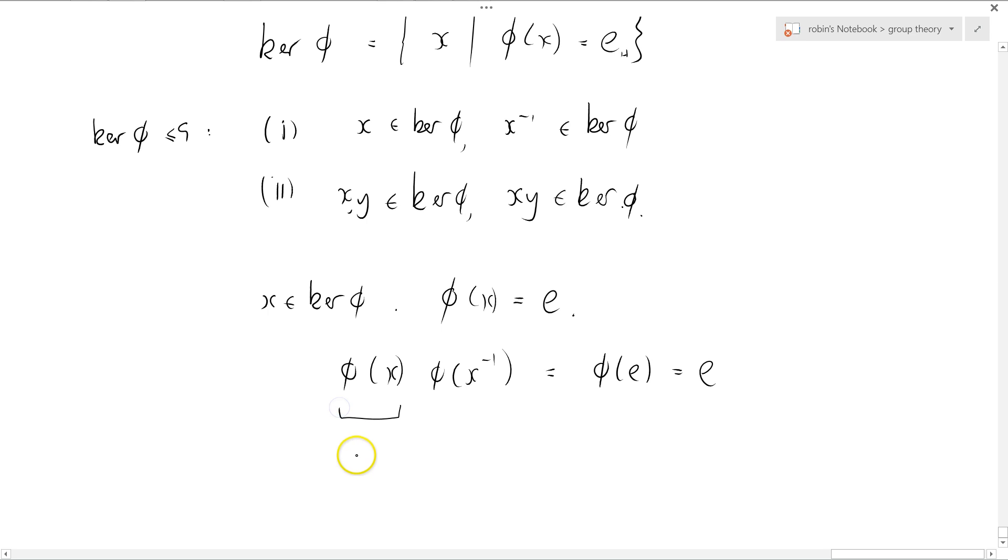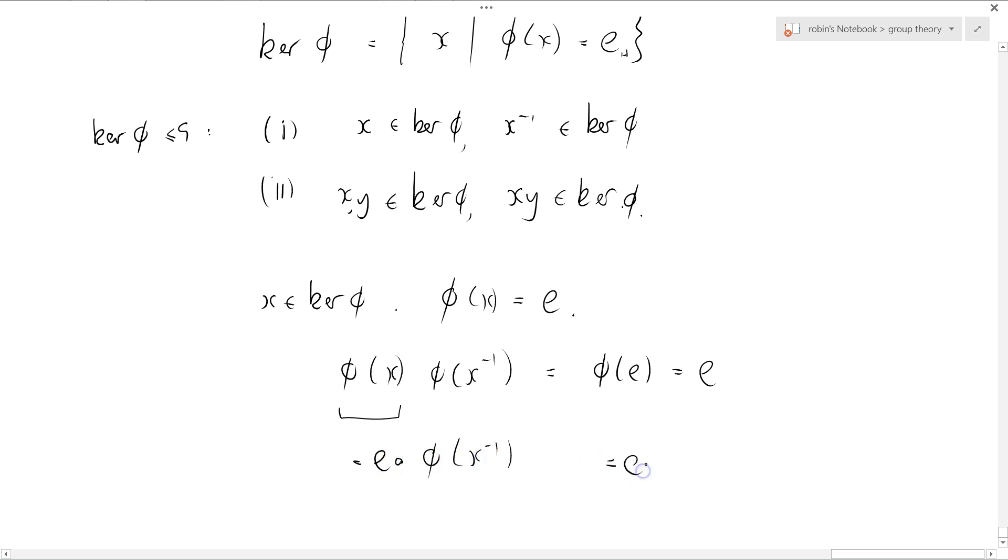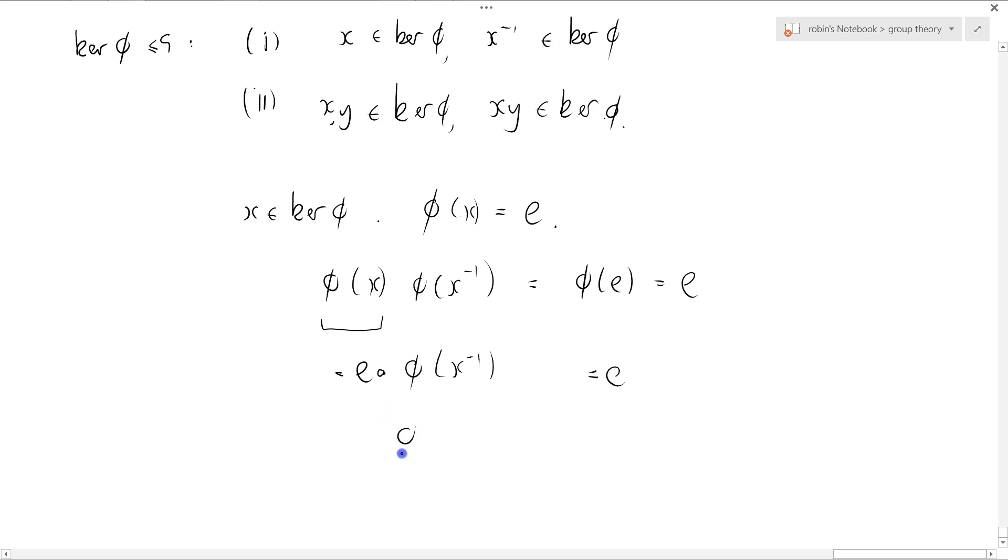But we know that phi of X, that is equal to E itself. So this, the left-hand side is equal to phi E combined with whatever symbol you use, X inverse equals E. So that tells us that phi X inverse equals E, which tells us that X inverse is a member of ker phi, which is this one.